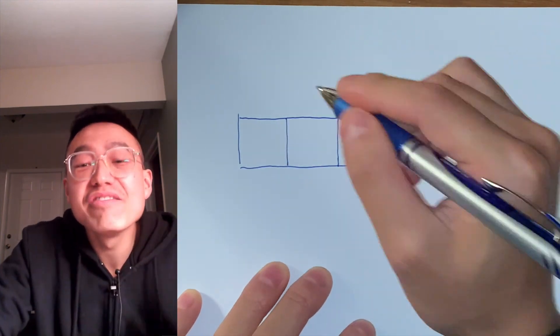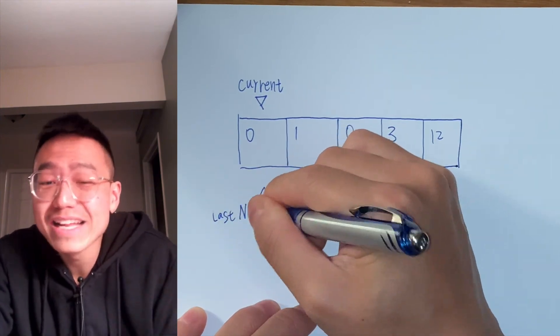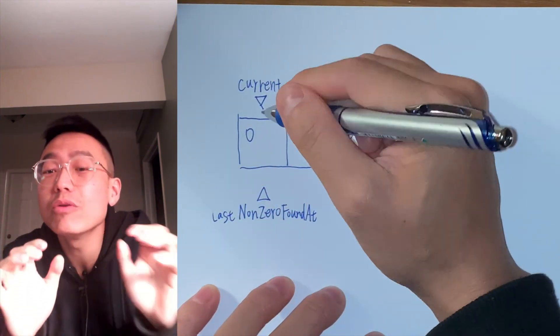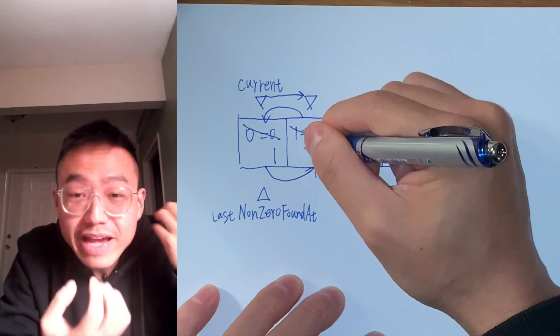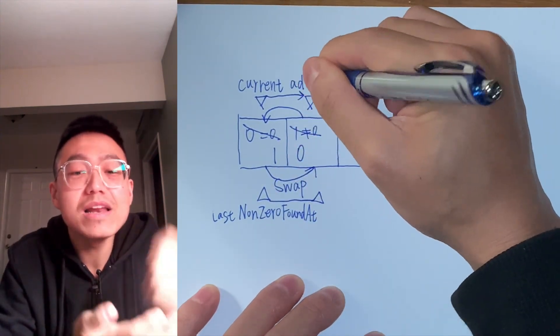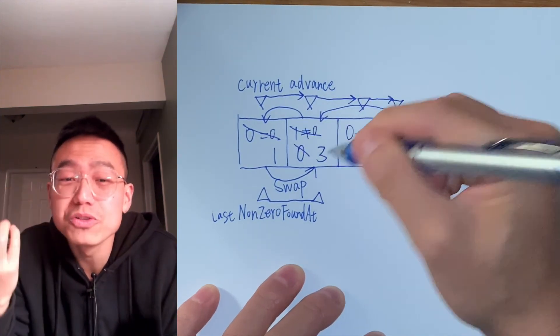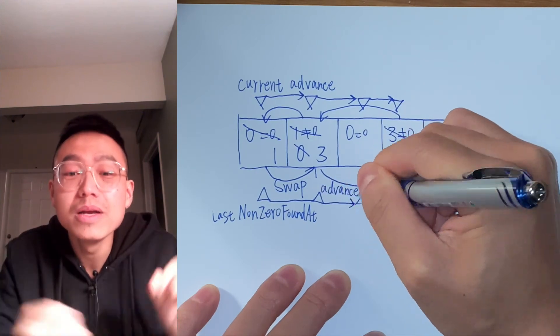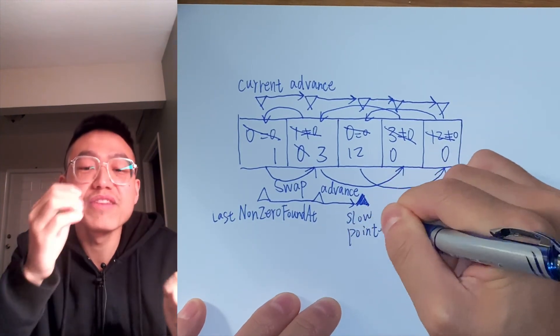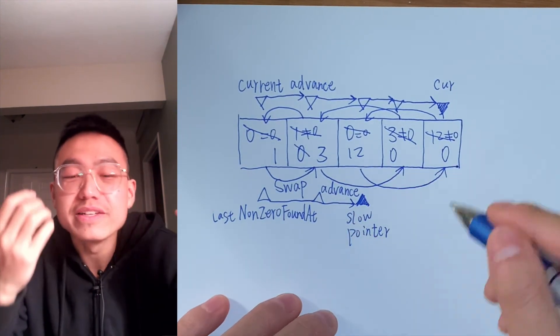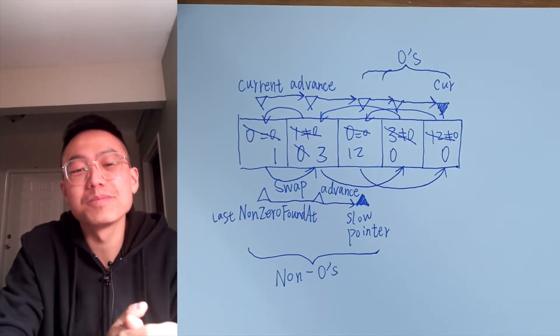We have to maintain the following invariant: all elements before the slow pointer are non-zero, and all elements between the current pointer and the slow pointer are zeros. Therefore, when we encounter a non-zero element, we need to swap the element pointed by current pointer and the element pointed by slow pointer. We swap the values, then we advance both pointers. But if it is a zero element, we just advance the current pointer. With this invariant in place, it is easy to see that this algorithm will work.